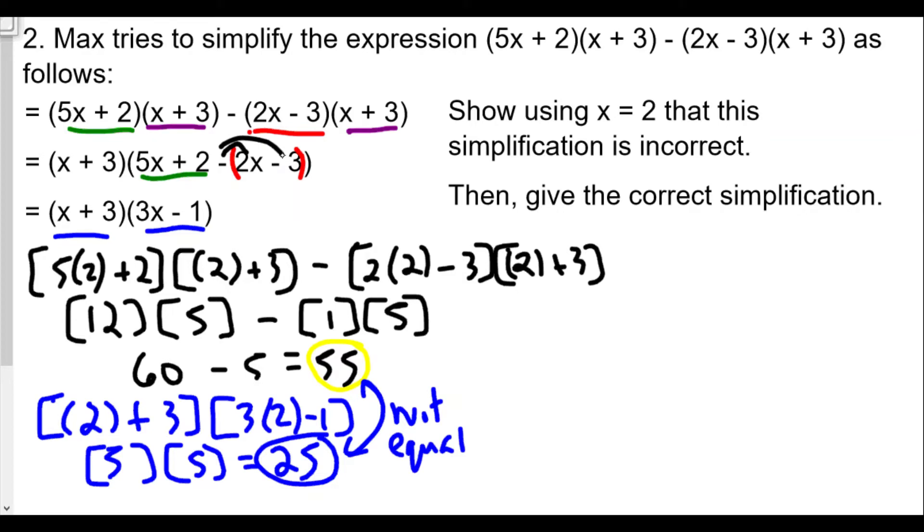So let's put this over here. We should be getting as a second line (x + 3) times [5x + 2 - (2x - 3)]. So I just want to show that up close here.